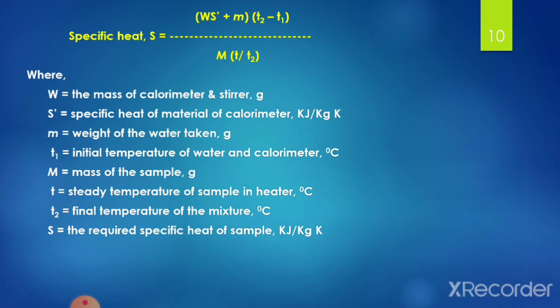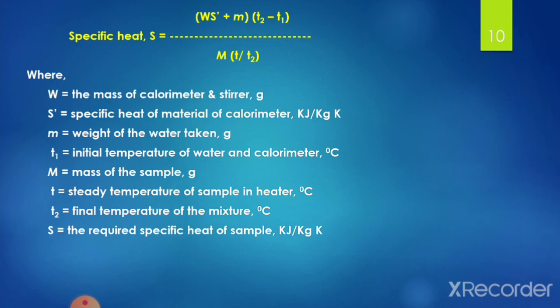In this equation: W is the mass of calorimeter and stirrer in grams; Sc is the specific heat of the calorimeter material in kJ per kg Kelvin; M is the weight of water taken in grams; T1 is the initial temperature of water and calorimeter in degree Celsius; M (capital) is the mass of the sample in grams; T is the steady temperature of the sample in the heater in degree Celsius; T2 is the final temperature of the mixture in degree Celsius; and S (capital) is the required specific heat of the sample in kJ per kg Kelvin.